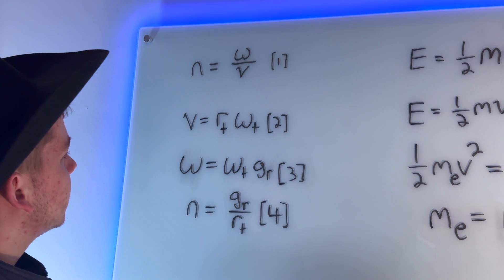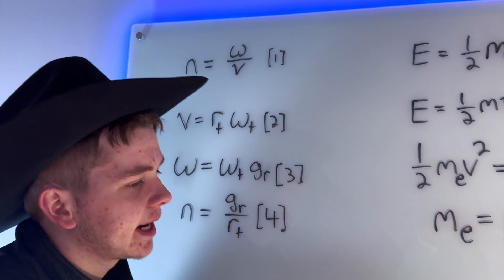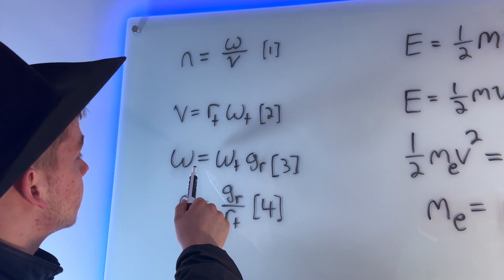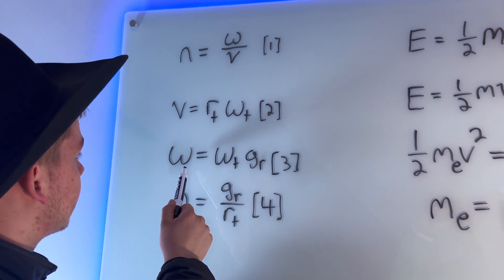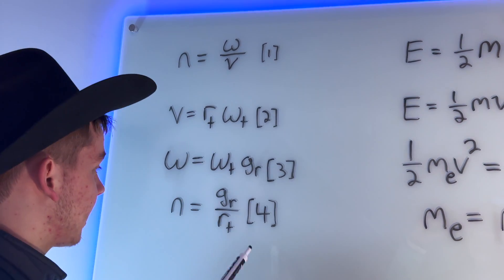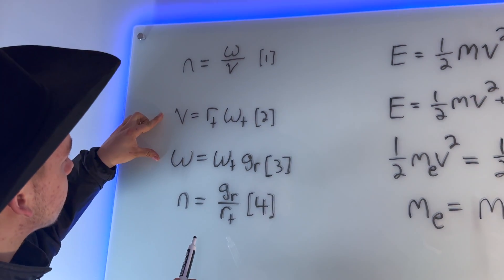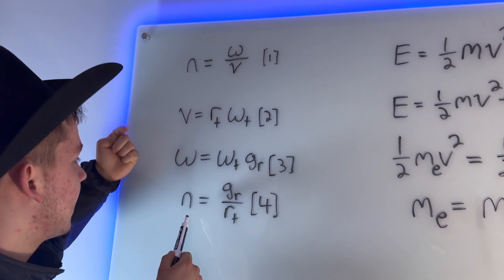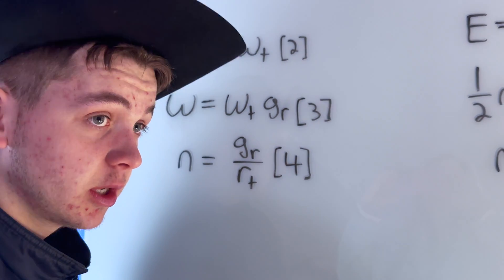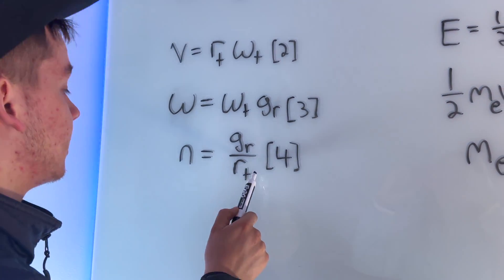We know that the linear velocity of the vehicle is just the rolling radius of the tire times the rotational velocity of the tire. And we know how to relate the rotational velocity of that component to the rotational velocity of the tire by multiplying it by a gear ratio. Plugging these two equations into that first one, we can redefine n as the ratio of the rotational velocity of the component in question to the rotational velocity of the tire, scaled by the rolling radius of the tire.